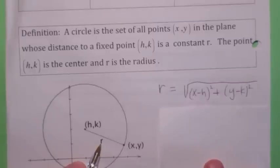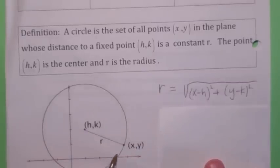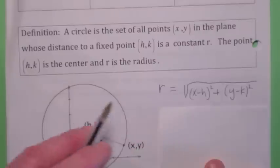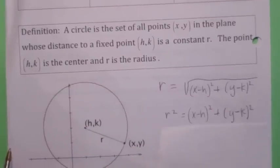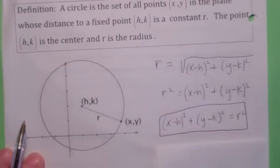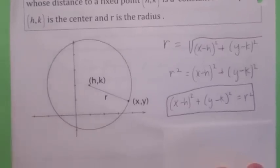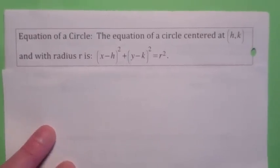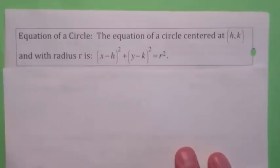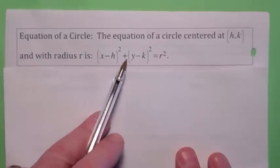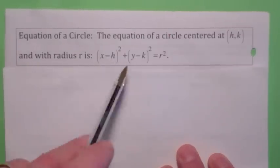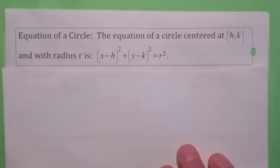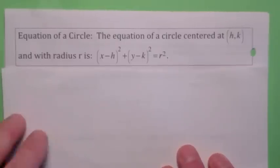By the distance formula, r equals the square root of (x minus h) squared plus (y minus k) squared. If you square both sides, you get r squared equals (x minus h) squared plus (y minus k) squared. So the equation of a circle centered at hk with radius r is (x minus h) squared plus (y minus k) squared equals r squared. You need to know this formula, but if you remember how we derived it, it's not that hard to remember.